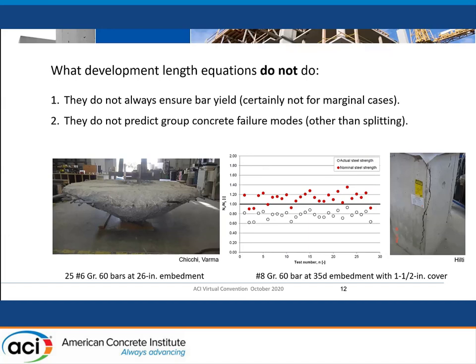To recap, what do development length equations not do? They don't necessarily always get to yield — that was a big shock to me. And they don't ever give you a hint about the kinds of failures that Amit Varma showed you. I'm going to repeat this figure because it's such a nice photograph of a breakout body with, I believe, 25 number 6 bars. What I always like to point out is all that heavy mat reinforcing in the specimen — placed there to prevent splitting — but it does nothing for the breakout capacity. By the time the breakout fracture has progressed to that extent, the mat reinforcing can't contribute to the ultimate strength of that connection.